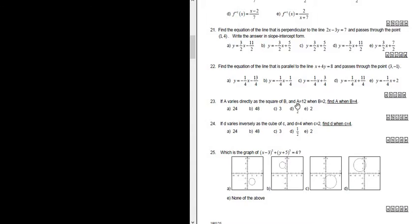Wow, so that's a lot to read at once. So the way I do these problems is I read them like one little piece at a time. So if A varies directly as the square of B, okay, so let's write down what that means.